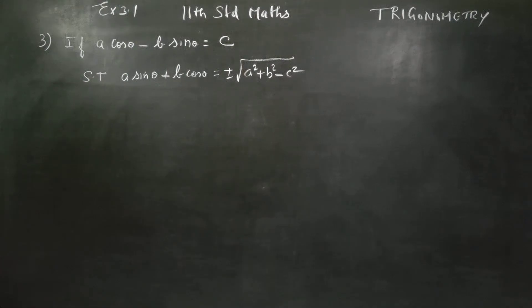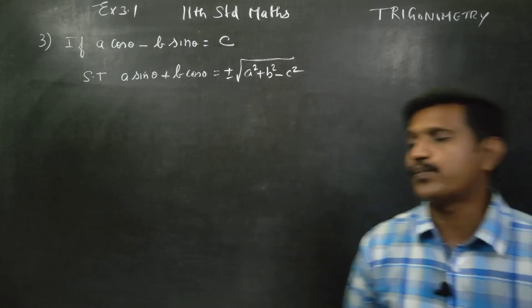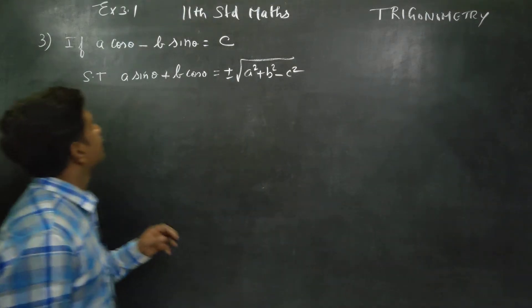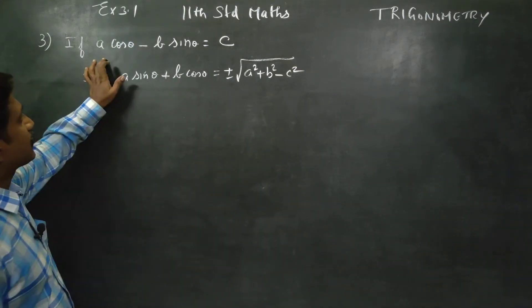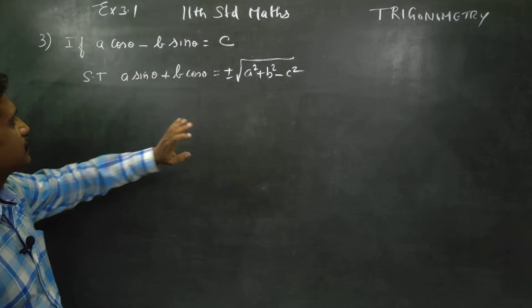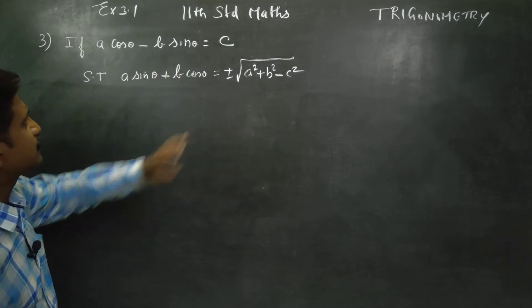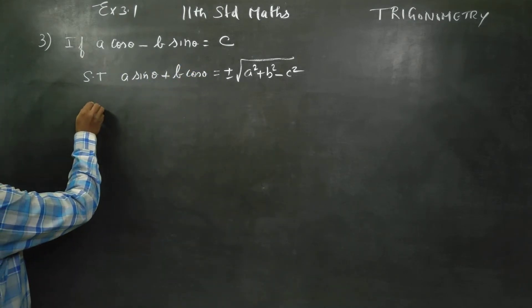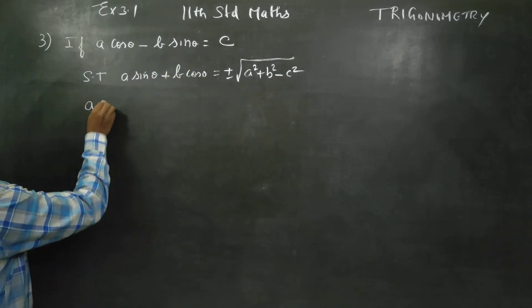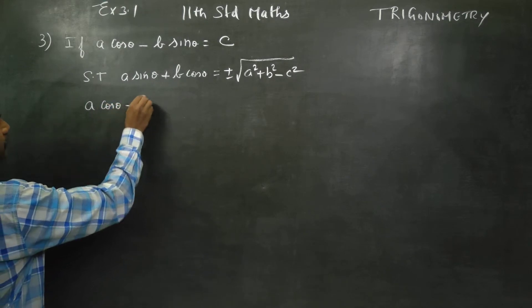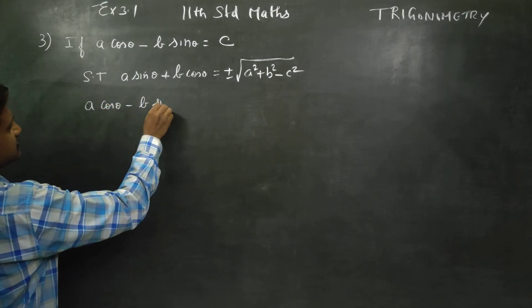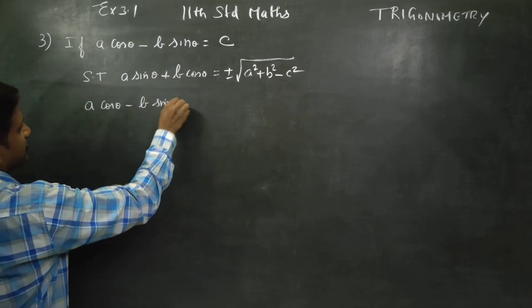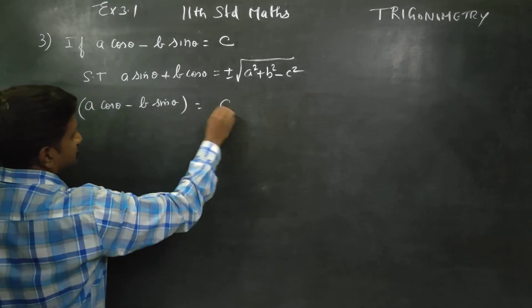Hello 11th standard students, I am Metro Karanagaran. In exercise number 3.21, sum number 3, the given question is A cos theta minus B sin theta is equal to C, and I have to prove this.